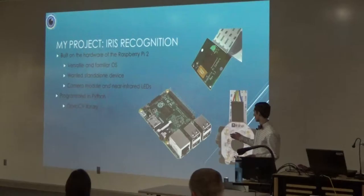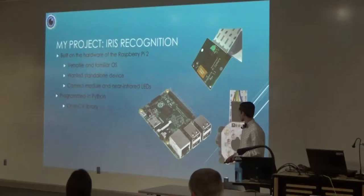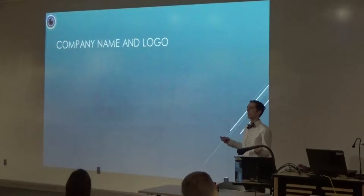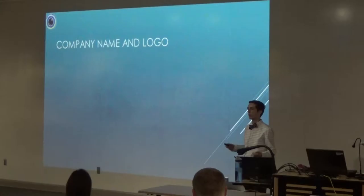Not only did I want to program the software, I wanted to create a standalone device that could perform iris recognition. For the hardware, I built it on the Raspberry Pi 2 micro-computer - it's a small little computer but it runs a completely full-blown Linux operating system. This allows me to program in higher-level programming languages like Python, which is what I programmed in, and it allows me a much greater degree of familiarity. I used the OpenCV computer vision library, which allows me to do a lot of the heavy lifting with regards to image manipulation.